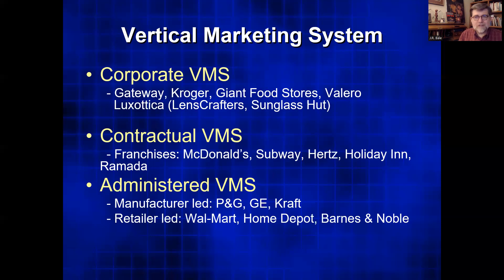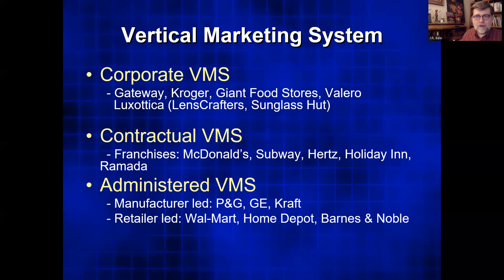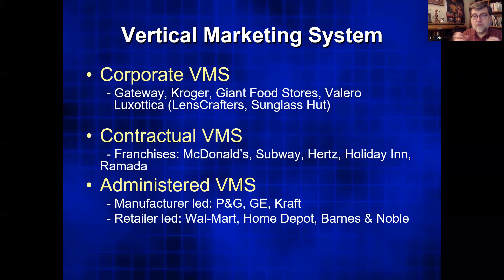Walmart tells manufacturers how they want things done — what size boxes they should be in, what size pallets. Walmart is very good at handling logistics. They make sure a truck has as little empty air in it as possible, so for that tank of gas they're expending, they're getting the maximum amount of product to the location they're shipping to. Home Depot similarly tells product manufacturers how they want their product to fit in their store.